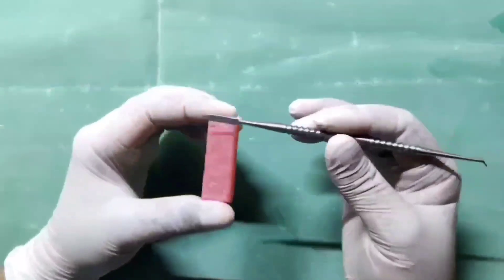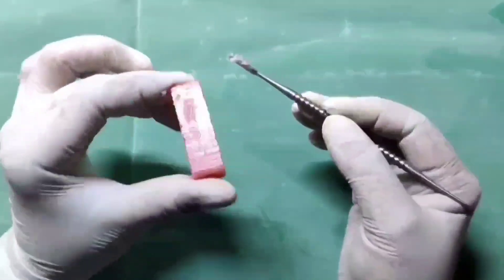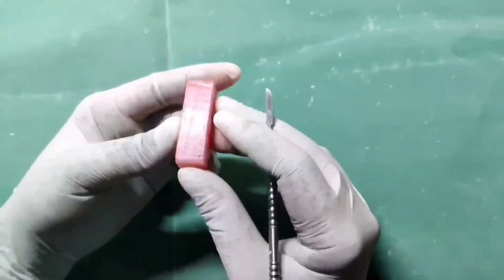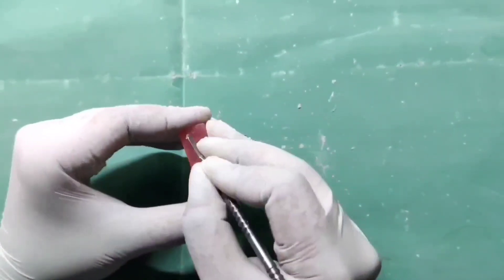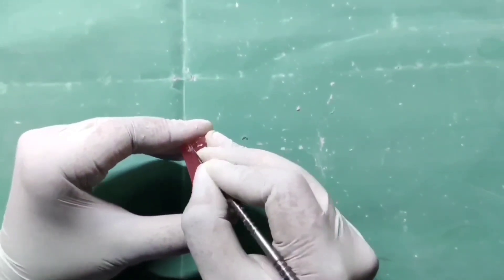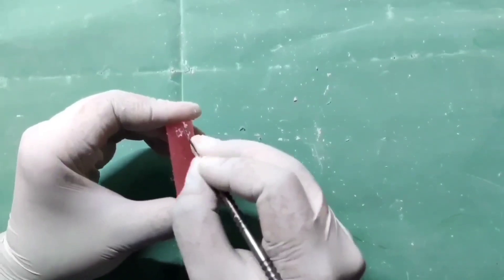First we will smooth the wax block to get an even surface and label the buccal aspect, palatal or lingual aspect, mesial aspect, and distal aspect.